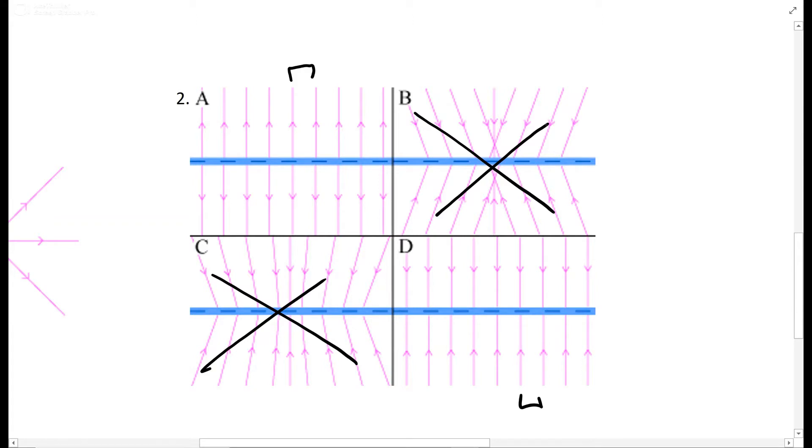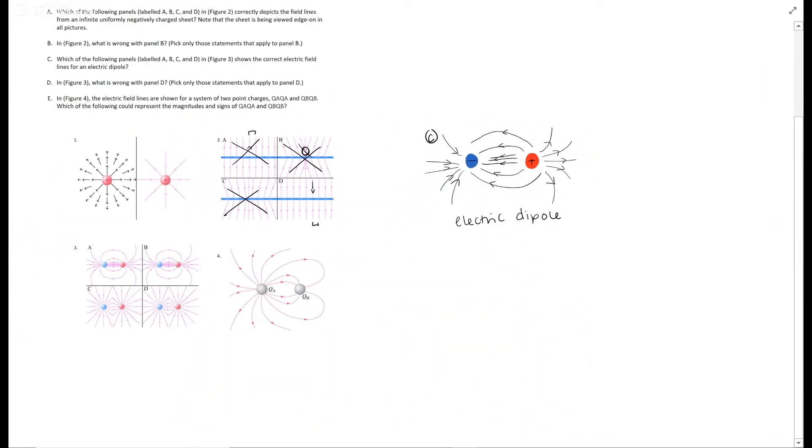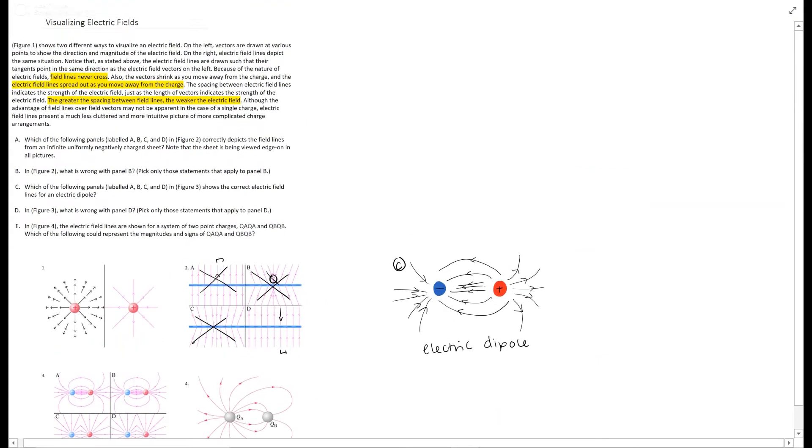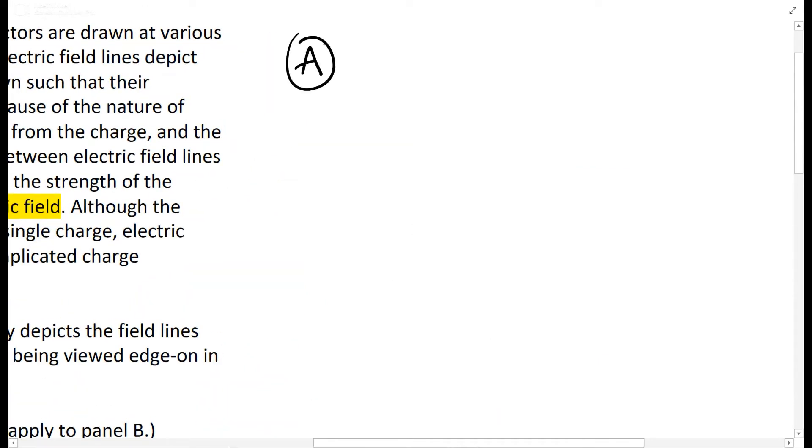Also, as we read in the intro, field lines never cross, so this is just wrong. And then since it is negative, field lines point towards the negative, so you're going to want them going into the sheet like this, not out of the sheet like this. So D is your answer for part A. For an infinitely negative sheet with all these negative signs, you want straight, evenly-spaced field lines going towards it.